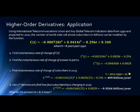We're using International Telecommunications Union and Key Global Telecom Indicators data from 1990 and projected to 2020. The number of worldwide cell phone subscribers in billions can be modeled by this function C(t) = -0.000728t³ + 0.0414t² - 0.296t + 0.340, where t equals the number of years past 1990. So if t was 1, that would represent 1991.